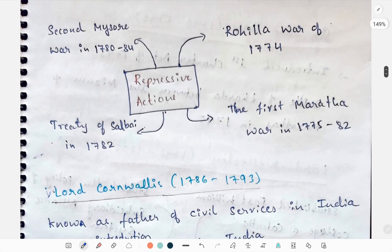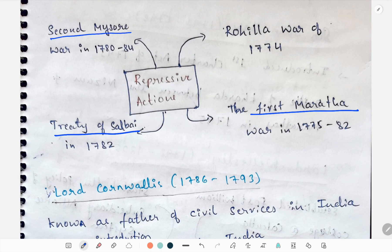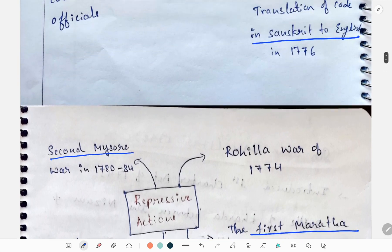His notable military actions were the Rohilla War of 1774, then the First Maratha War and the Treaty of Salbai, and the Second Mysore War in 1780.